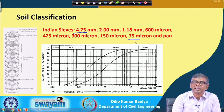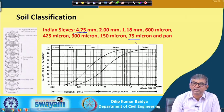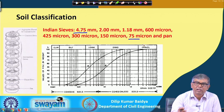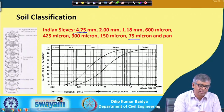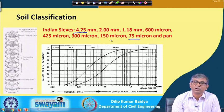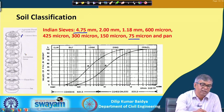As per Indian Standard, sieve sizes range between 4.75 millimeters at the top and 75 microns at the bottom. Below 75 microns, material is treated as silt, and silt cannot be classified by sieve analysis. So up to 75 microns we can do sieve analysis. Sieves are arranged with the higher size at the top and smaller size below, with the pan at the bottom without any opening.